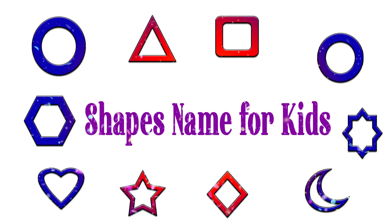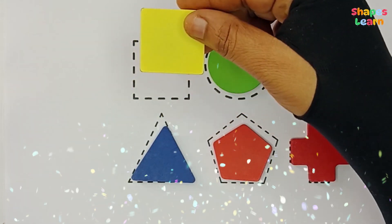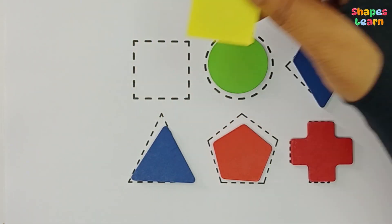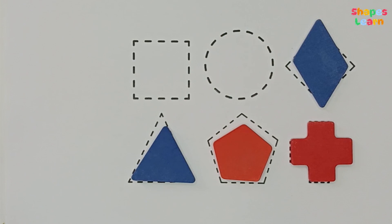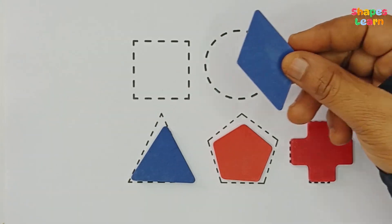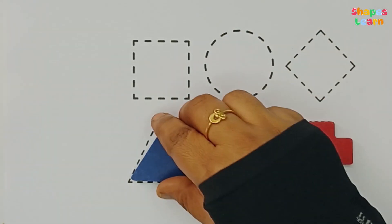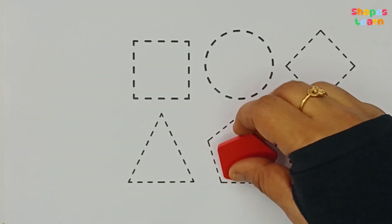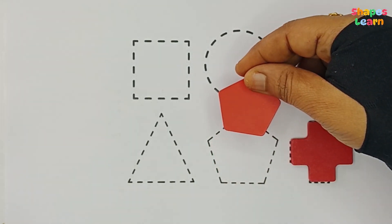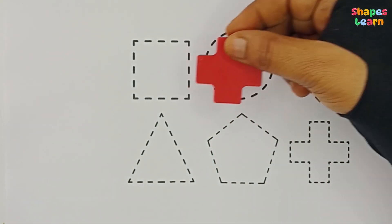Shapes Names for Kids. Square. Circle. Rhombus. Triangle. Pentagon. Cross.